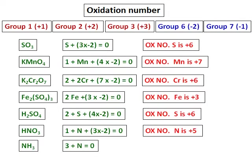If you notice nitric acid and ammonia, the oxidation number of nitrogen in one is positive 5 and in the other it is negative 3. So nitrogen, belonging to group 5, can show an oxidation state varying from positive 5 to negative 3. See the other compounds of nitrogen like NO, NO2, and N2O3 — if you find out the oxidation numbers, you will see the different oxidation numbers of nitrogen.